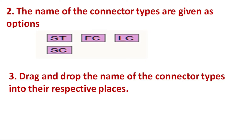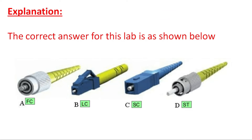Let's check the correct answers for the simulation. Looking at the picture: connector A is FC — this is the FC connector type. Connector B is LC — this is the LC connector type. Connector C is SC — this is the SC connector type. Connector D is ST — this is the ST connector.